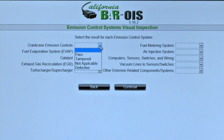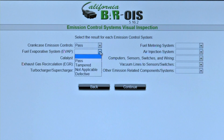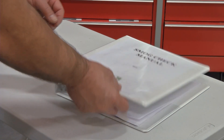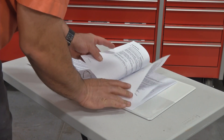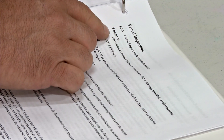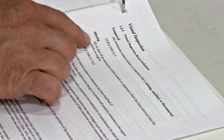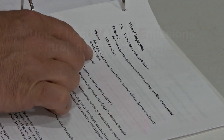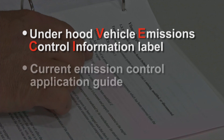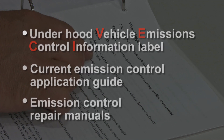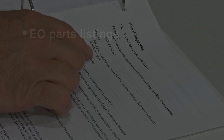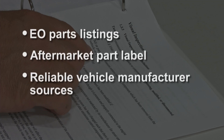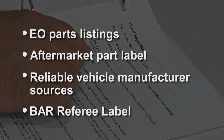During the visual inspection, the inspector identifies each emissions component required to be on the vehicle and makes sure all components are installed and properly connected. Inspectors must use all available information to determine the vehicle's emission control requirements, including the Underhood Vehicle Emissions Control Information Label, a current Emission Control Application Guide, Emission Control Repair Manuals, Emission Component Location Guides, Manufacturer Emission Control Recalls, Vacuum Hose Routing Diagrams, EO Parts Listings, the Aftermarket Part Label, and any reliable vehicle manufacturer sources. In some cases, a vehicle may have a BAR Referee label that identifies emission control and inspection requirements.